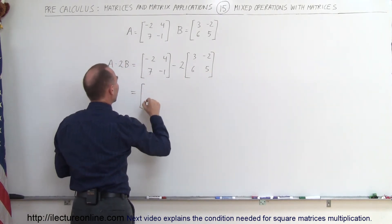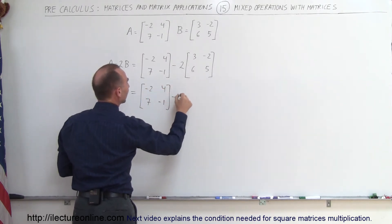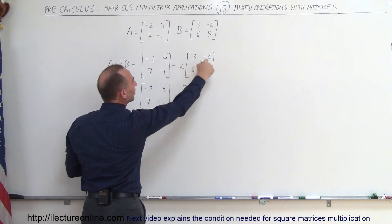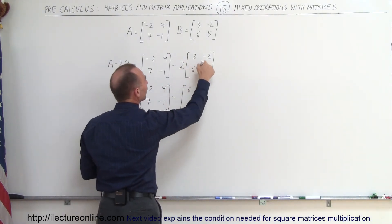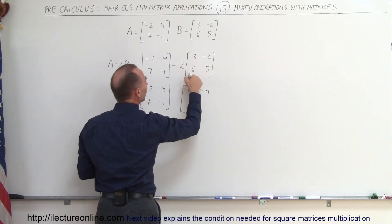So this can be written as negative 2, 4, 7, negative 1, minus and now will be 2 times every element inside the matrix B so 2 times 3 would be 6, 2 times negative 2 is negative 4, 2 times 6 is 12 and 2 times 5 is 10.